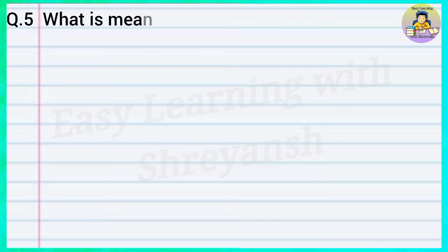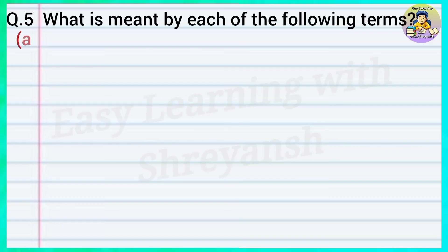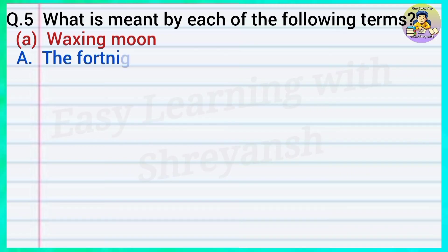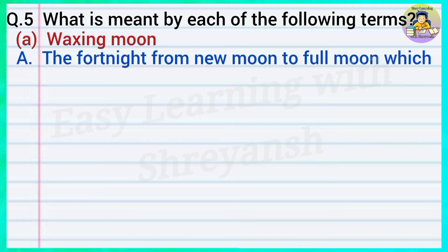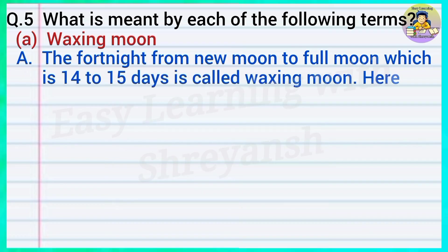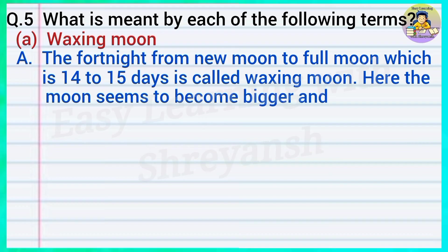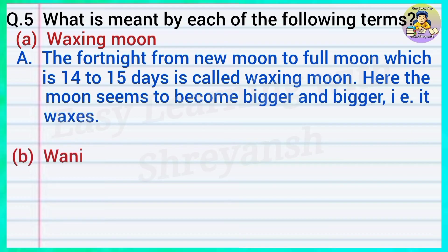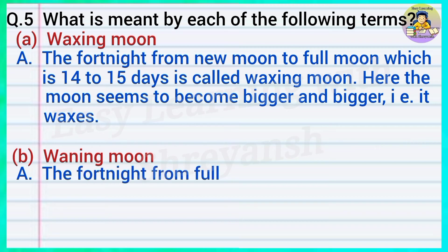Question number five: What is meant by each of the following terms? A — waxing moon: The fortnight from the new moon to full moon, which is 14 to 15 days, is called the waxing moon. Here the moon seems to become bigger and bigger, that is, it waxes.